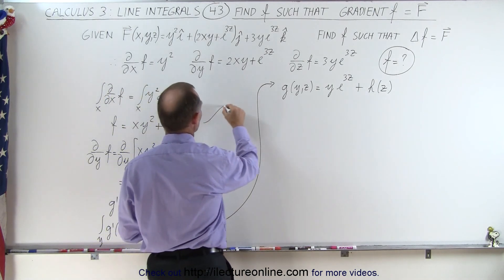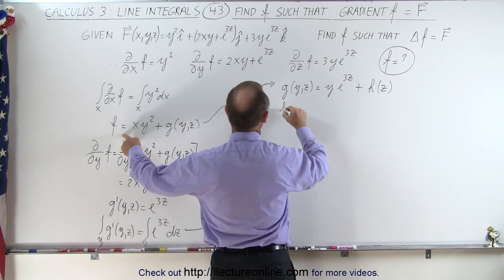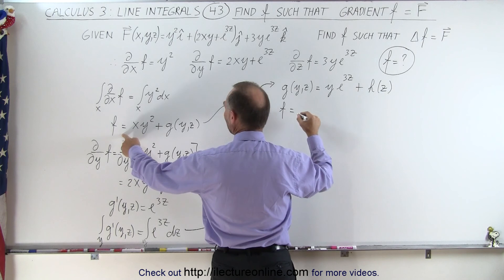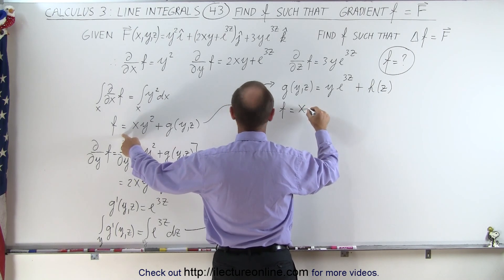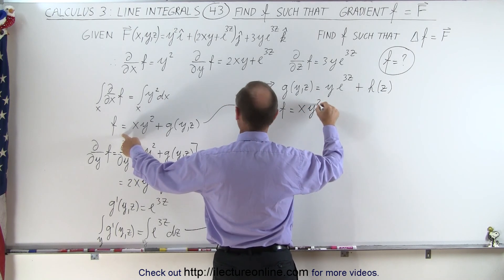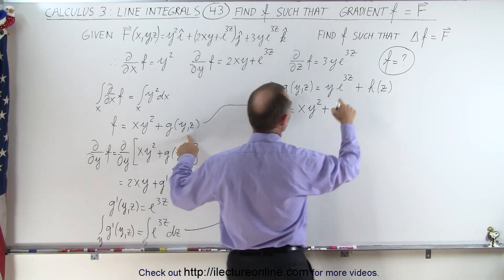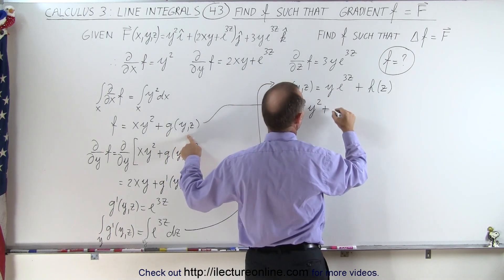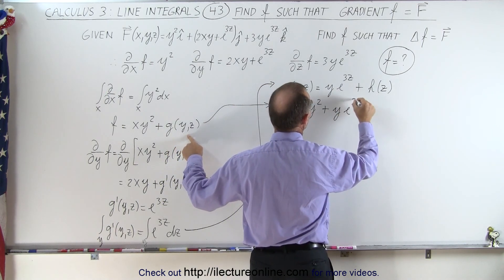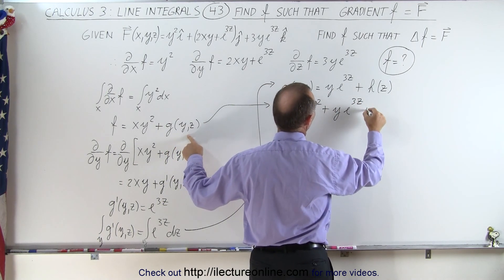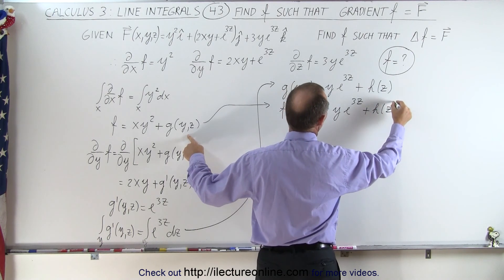We can add it back in. So from here, F can now be written as X Y squared plus G of Y, Z, which is Y E to the 3Z, plus H of Z.